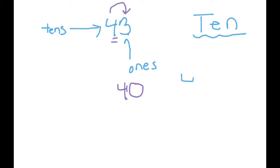Suppose you have the number 41. We're going to do the same thing. We find our number, which is this four, and we look next door. Is that number four or more? It's not. So the four stays the same and everything behind the four changes to a zero. We end up with the same number.